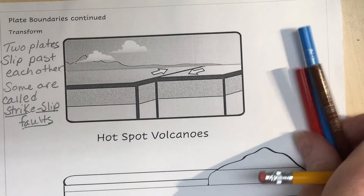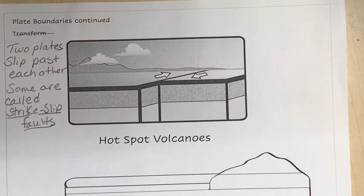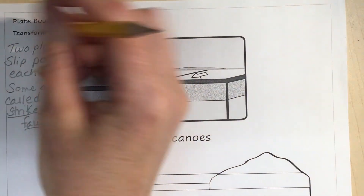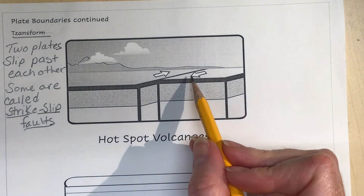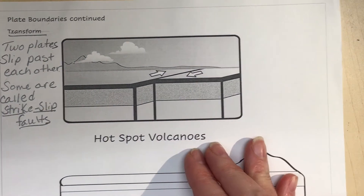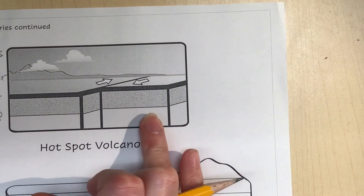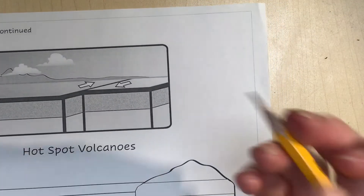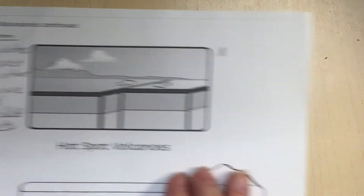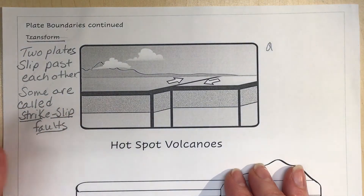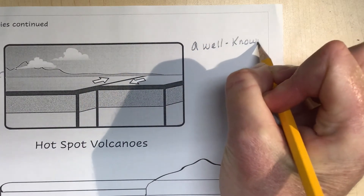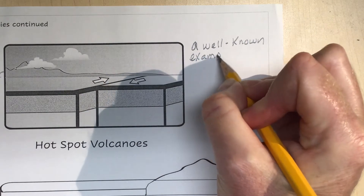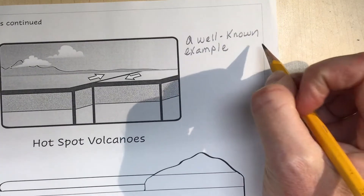Most of the time they're called transform plate boundaries, but sometimes they're called strike-slip faults. Basically the plates are sliding past each other — you still have magma down here but it's not coming into play. Our well-known example is really close to us: the San Andreas Fault, which is between Santa Clarita and Palmdale — that's the plate boundary.